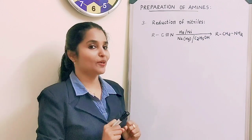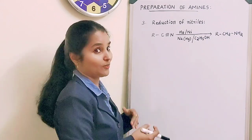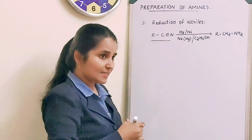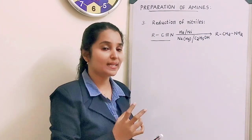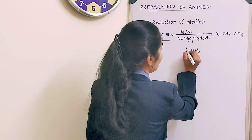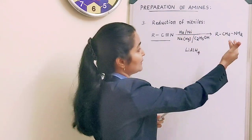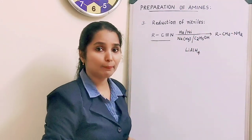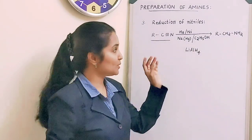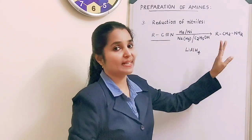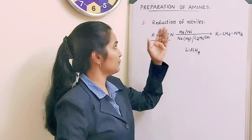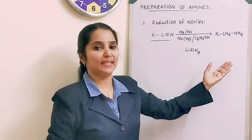The third method of preparation is reduction of nitriles, and it's very important because you will get tricky questions about predicting products or reactants. A nitrile (R-CN) can be reduced either by catalytic hydrogenation or by lithium aluminium hydride (LiAlH₄) to give the corresponding amine. The speciality of this method is that the product amine has one carbon more than the starting nitrile.